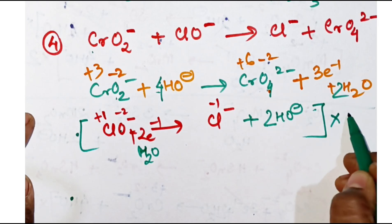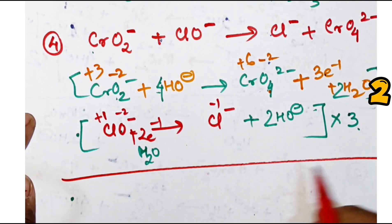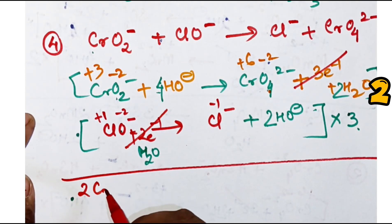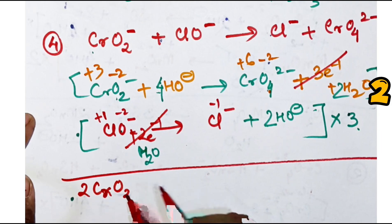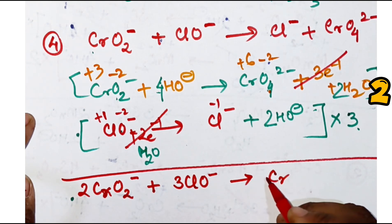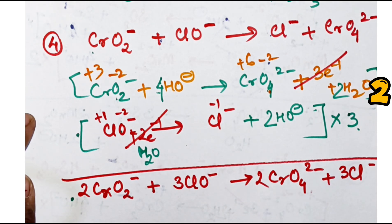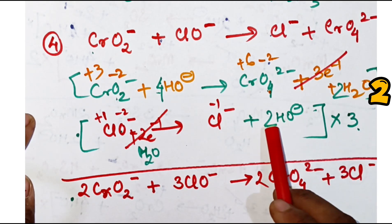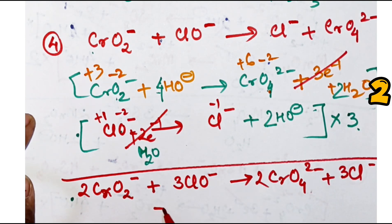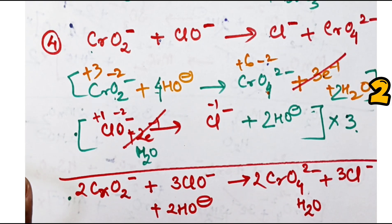Multiply the CrO₂⁻ equation by two and the ClO⁻ equation by three to cancel the six electrons. Write: 2CrO₂⁻ plus 3ClO⁻ gives 2CrO₄²⁻ plus 3Cl⁻. Now balance hydroxyl and water: four twos are eight OH⁻ on the left, three twos are six OH⁻ on the right — two more OH⁻ on the right. Water also balances with one extra molecule. So the balancing is done. Thank you.